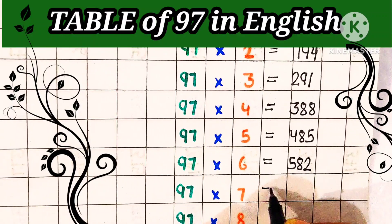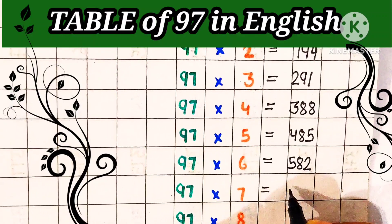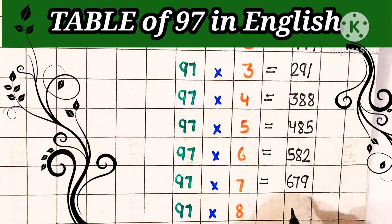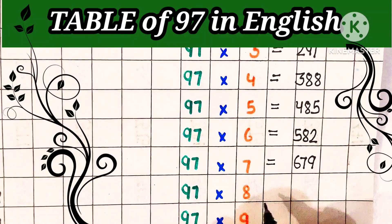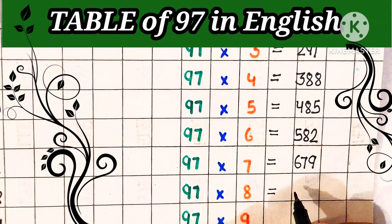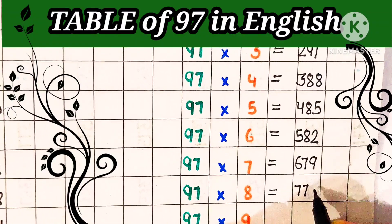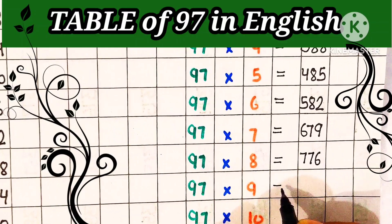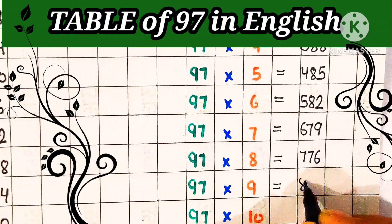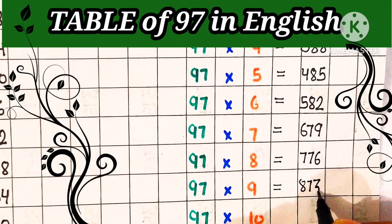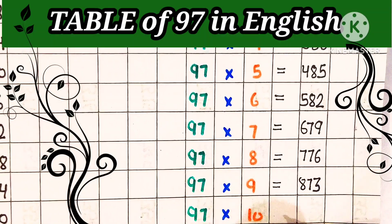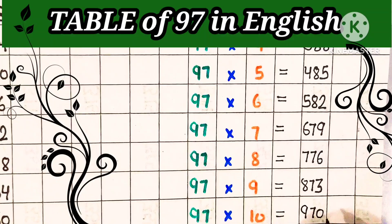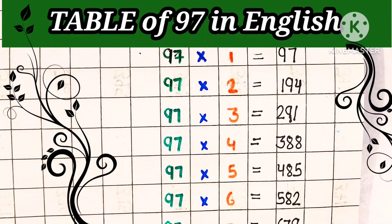97 sevens are 679, 97 eights are 776, 97 nines are 873, 97 tens are 970. Okay student,